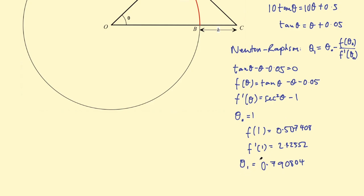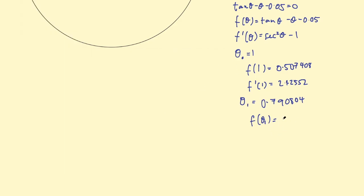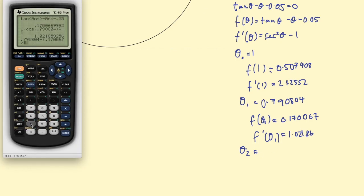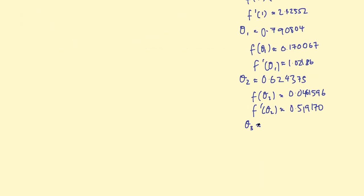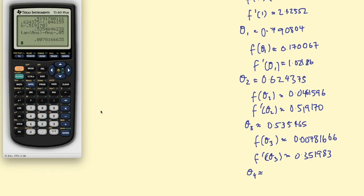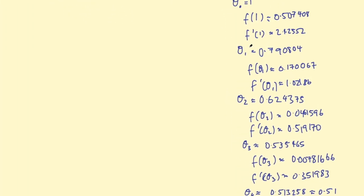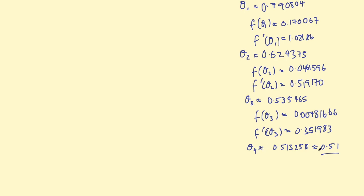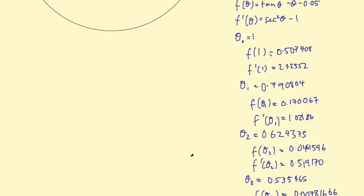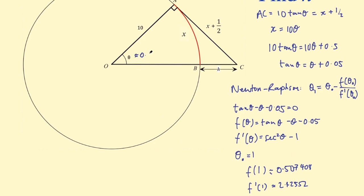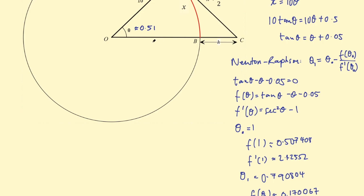I'm going to repeat this process maybe four or five times and then we'll end up with a decent approximation for theta. I have iterated that Newton-Raphson method four times, and theta sub 4, my fourth approximation, I got 0.513258, which I've rounded to two significant figures of 0.51. After all of that, I have an approximation for this angle of 0.51 radians. If you want to think in degrees, that's about 30 degrees. Now I have that angle, finding h shouldn't be too difficult.